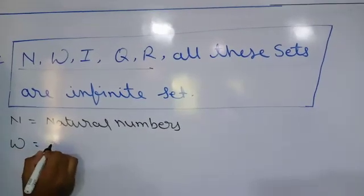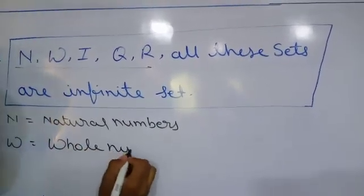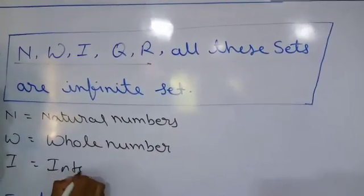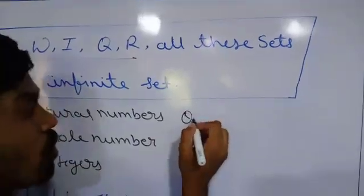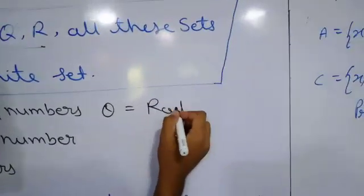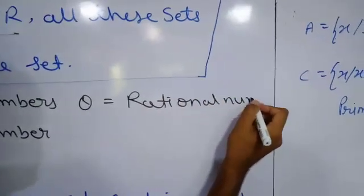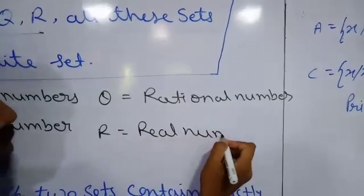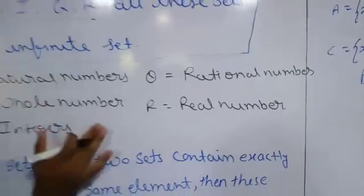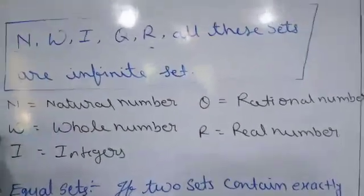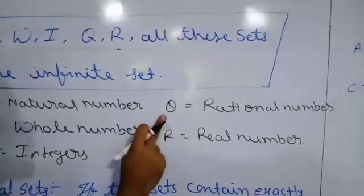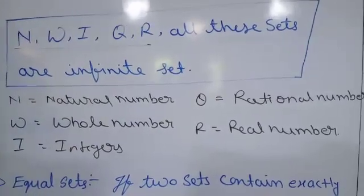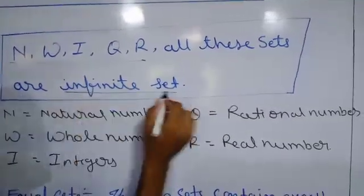N is the set of natural numbers, W is the set of whole numbers, I is the set of integers, Q is the set of rational numbers, and R is the set of real numbers. These five sets — natural numbers, whole numbers, integers, rational numbers, and real numbers — when we encounter these, we can blindly say these sets are infinite sets.